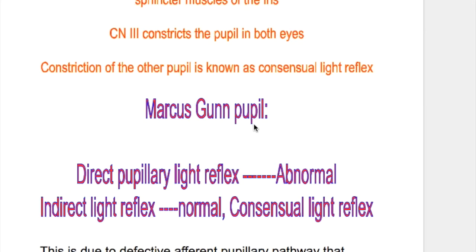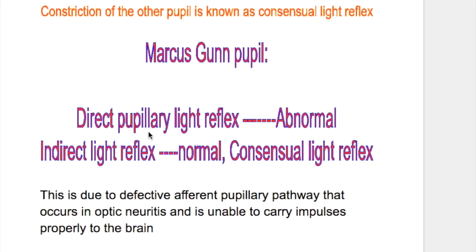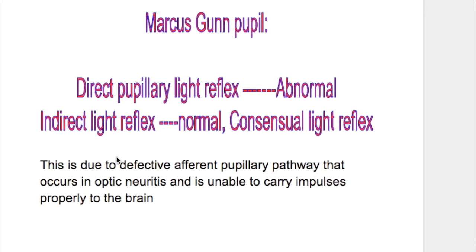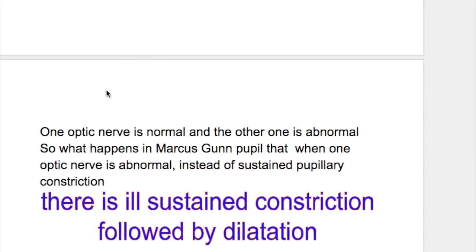In Marcus Gunn pupil, the direct pupillary light reflex is abnormal and the indirect pupillary light reflex — or the consensual light reflex — is normal. That is, when light is thrown on the affected pupil, the direct pupillary reflex — pupillary constriction — is abnormal. But when light is thrown on the other eye, this pupil will constrict. In Marcus Gunn pupil, one optic nerve is normal and the other one is abnormal.